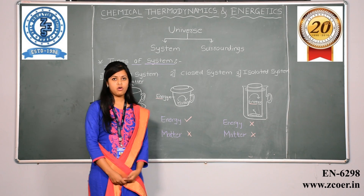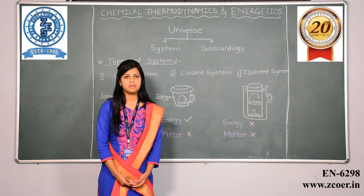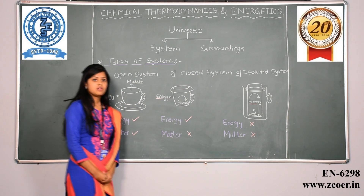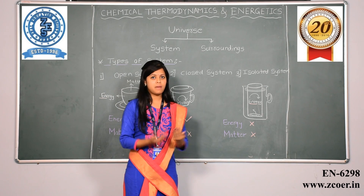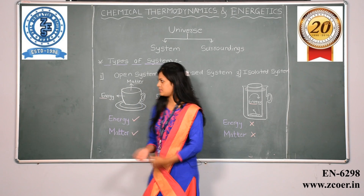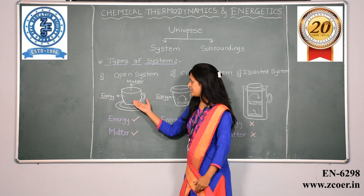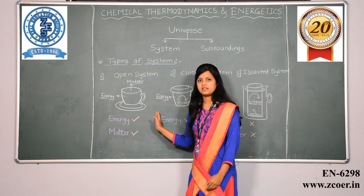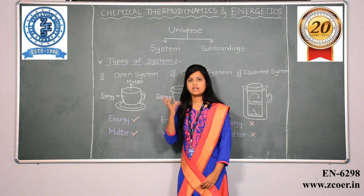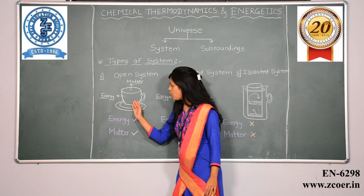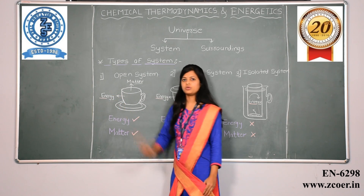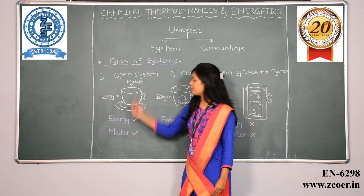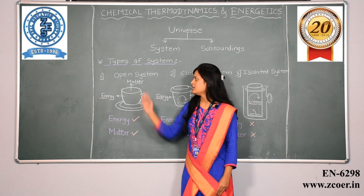Systems are divided on the basis of transfer of energy and matter. Now there are three types of systems: open system, closed system, and isolated system. A system where you can exchange matter as well as energy is called an open system. An example is a cup of tea wherein the vapour coming out of the tea can be exchanged with the surrounding, and similarly the tea becomes cold because all the heat energy is given out to the surrounding. So a system wherein both transfer of energy and matter can be done is called an open system.